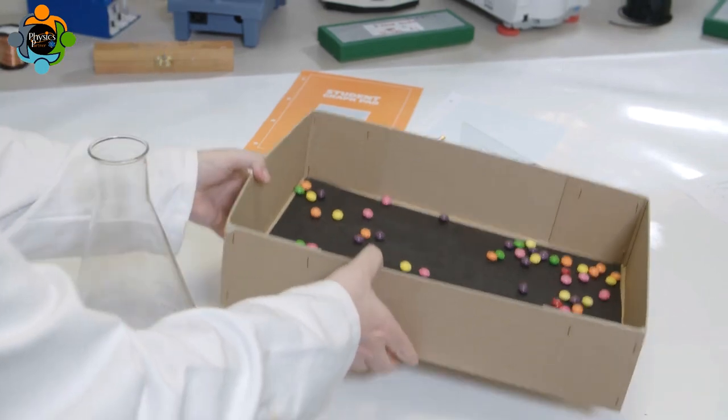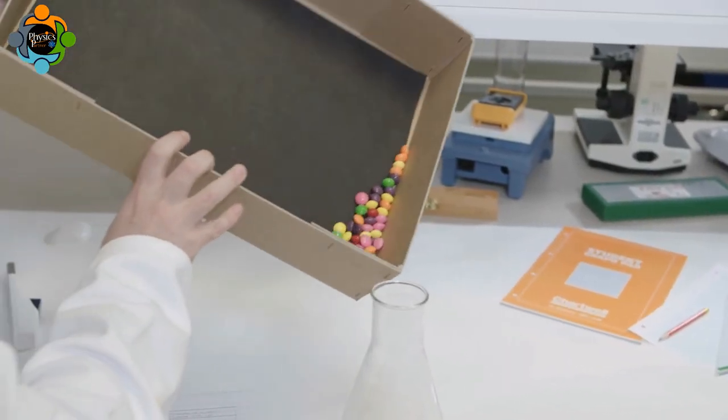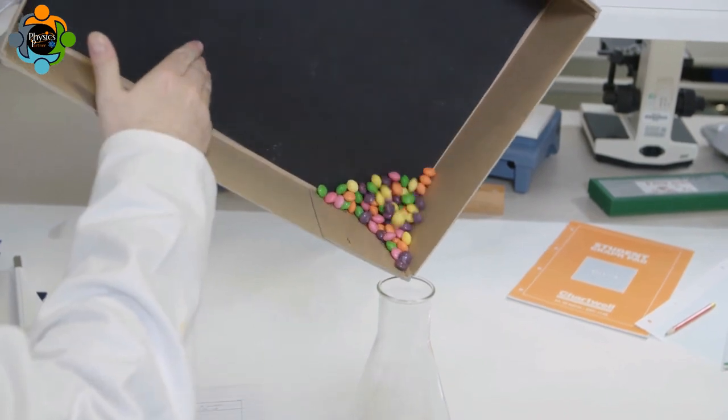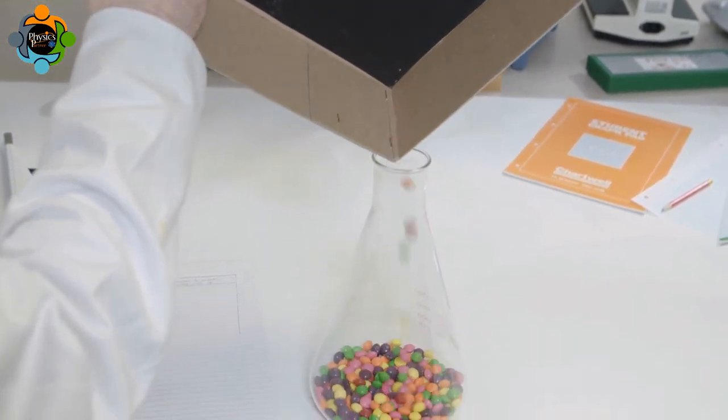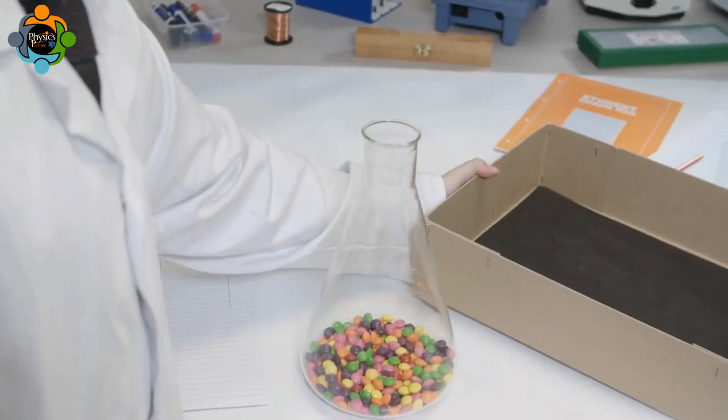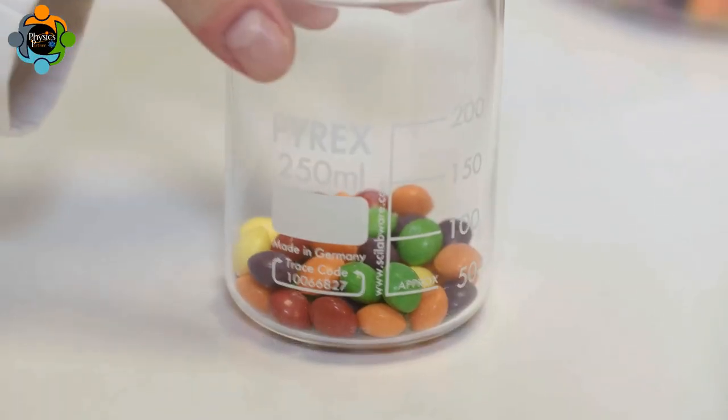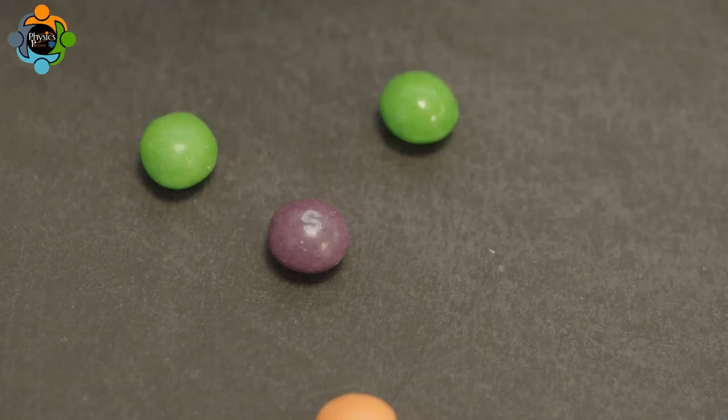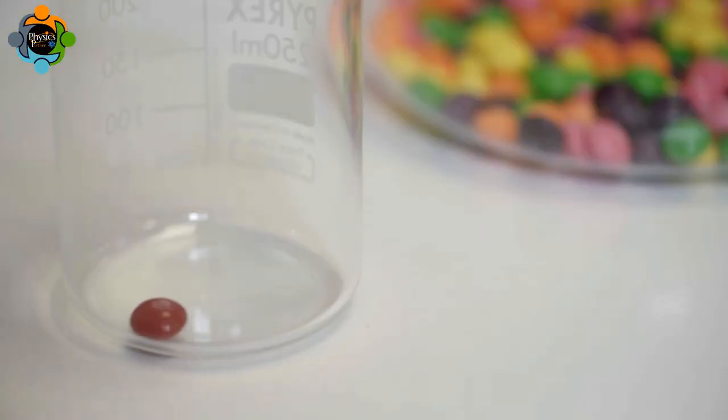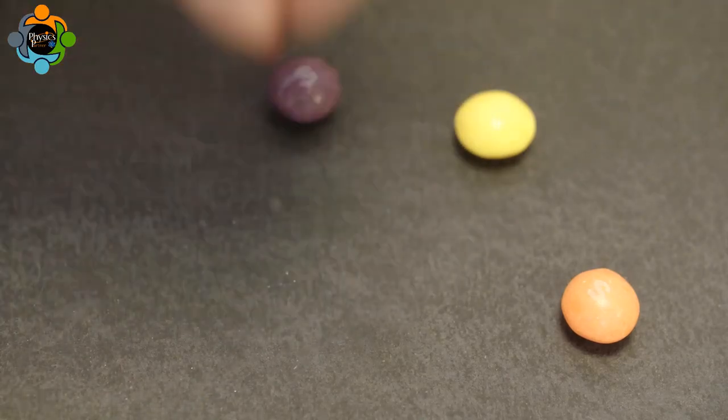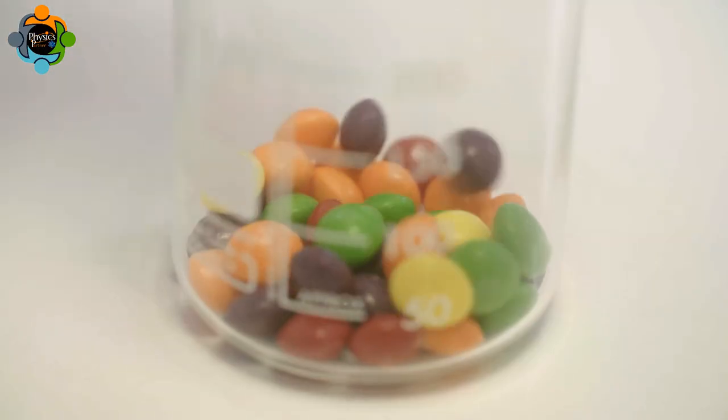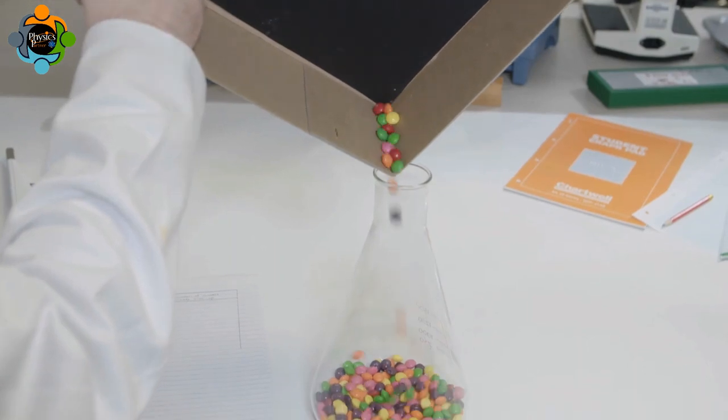To prepare for the second throw of the undecayed sweets, the decayed sweets still in the box are removed and put aside. Now the box is empty again. The beaker of remaining sweets is poured into the box again. As before, the sweets that landed marking side up are removed, put back into the beaker and counted. The remaining sweets are put aside as before.